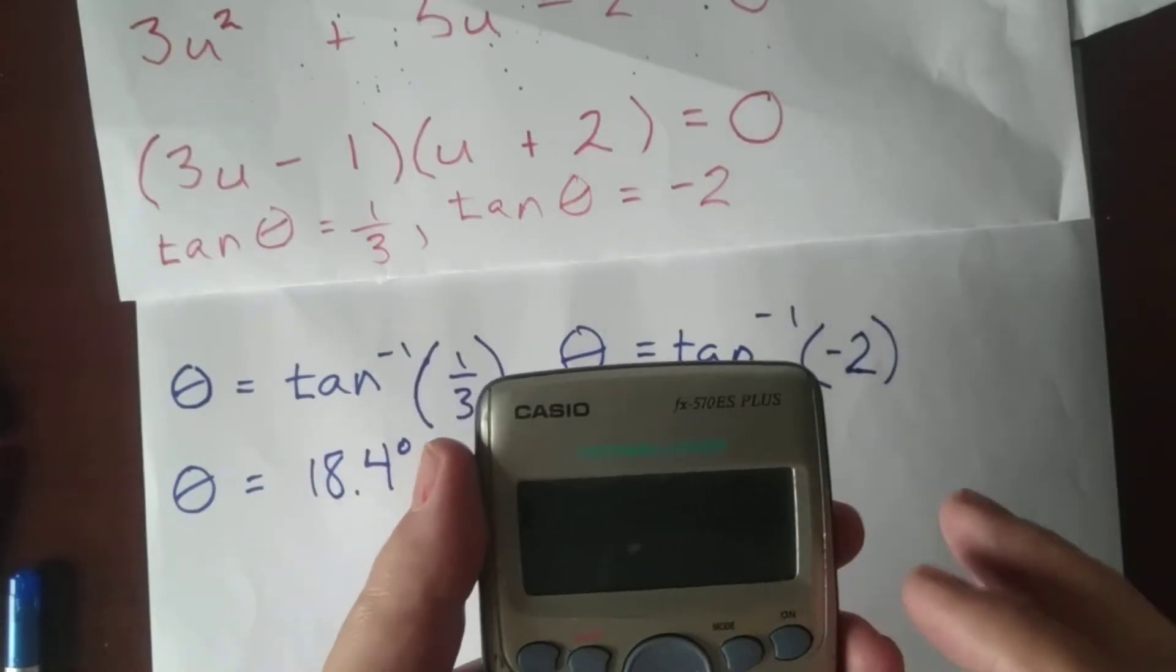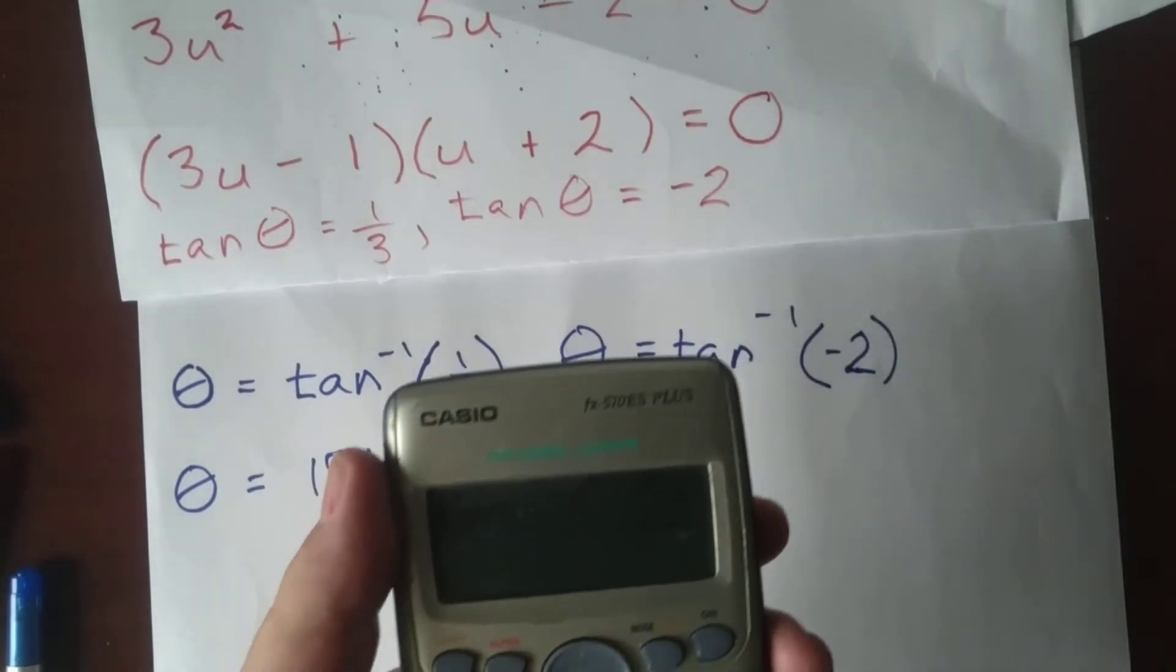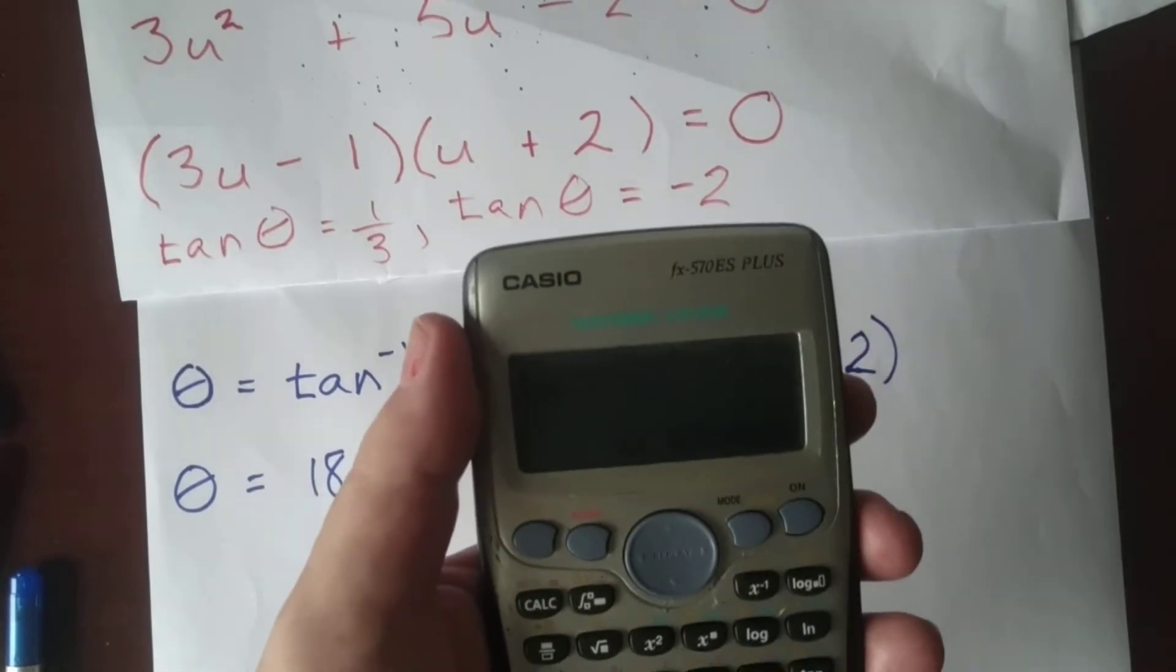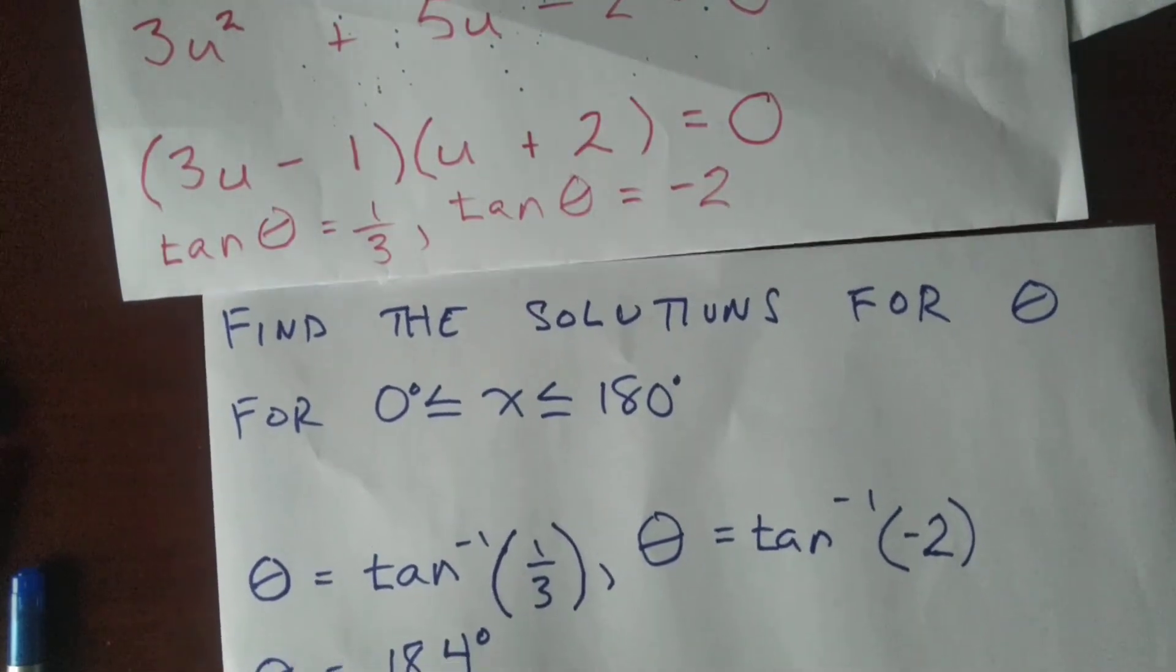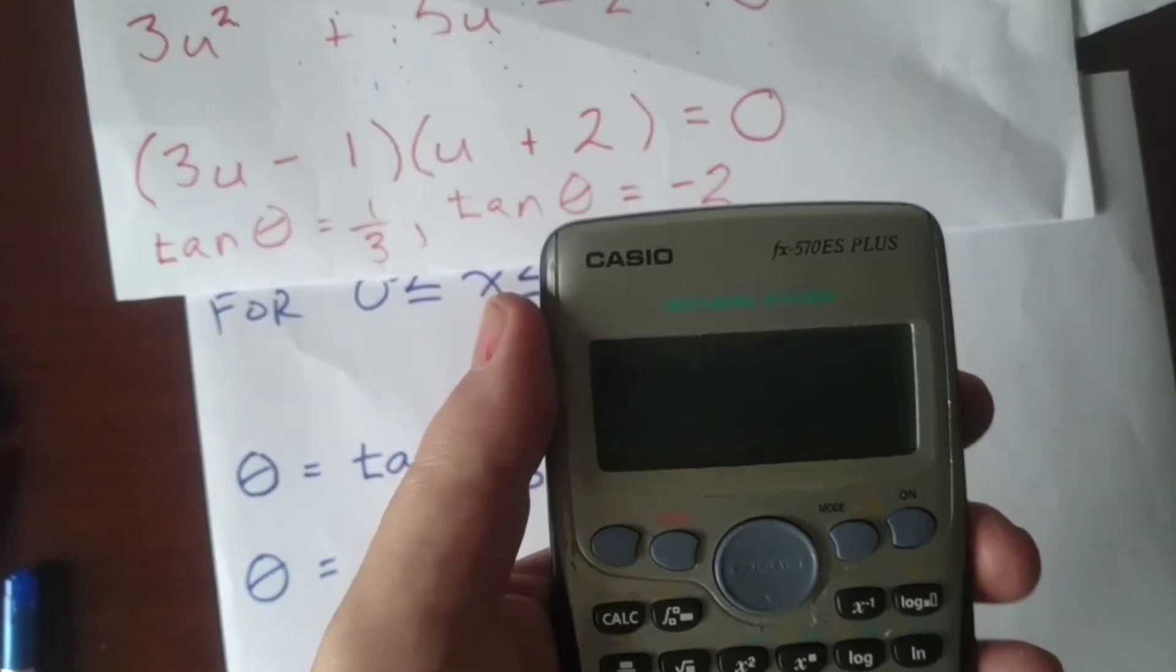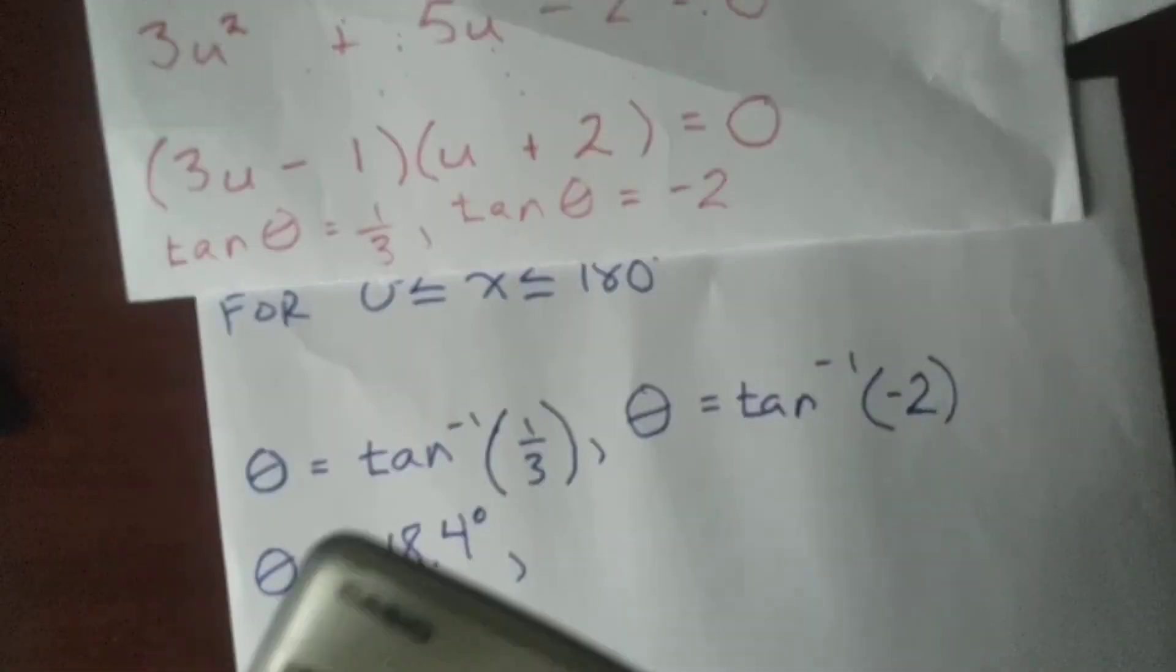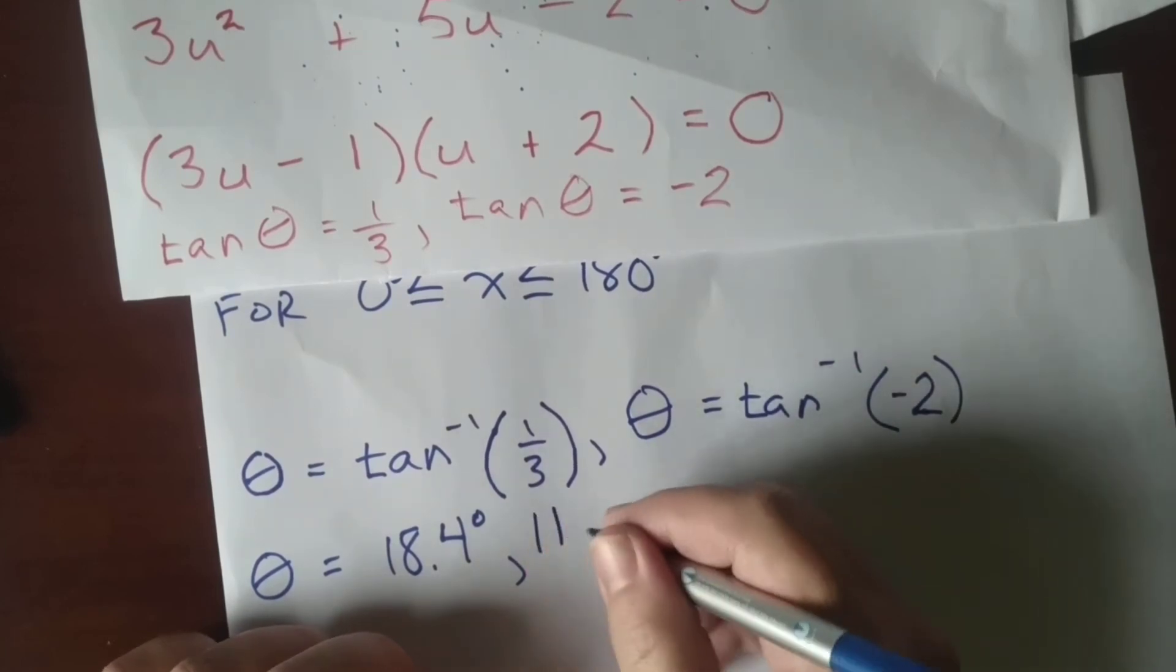So let's try this tangent to the negative one, the negative one of negative two: negative 63.4. Is that between zero and 180? No, but it repeats every 180 degrees, so I'm going to add 180 to it. And I'm going to get our value of 116.6. And we're finally done with this evil problem: 116.6.